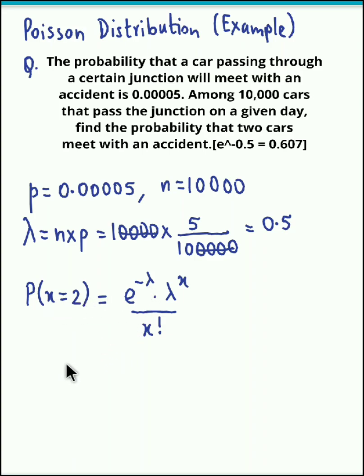Now we substitute all these values and we obtain e raised to minus 0.5. The value for lambda is 0.5, into lambda raised to x, that is 0.5 raised to 2, divided by 2 factorial. Now we have been given this value: e raised to minus 0.5 is 0.607.